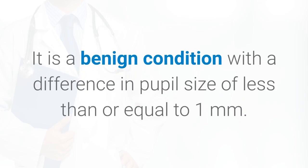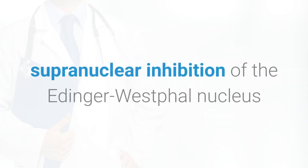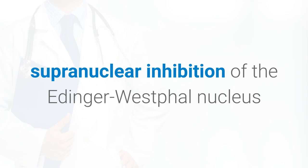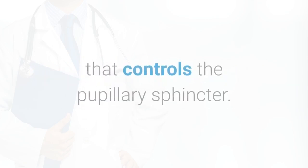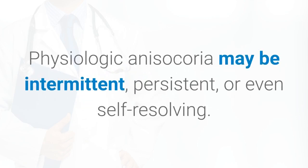It is a benign condition with a difference in pupil size of less than or equal to one millimeter. The exact cause is unknown, but it is thought to be due to transient asymmetric supranuclear inhibition of the Edinger-Westphal nucleus that controls the pupillary sphincter. Light and near responses are intact, and the degree of anisocoria is typically equal in light and dark. Physiologic anisocoria may be intermittent, persistent, or even self-resolving.